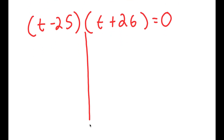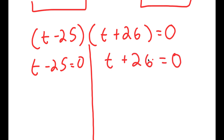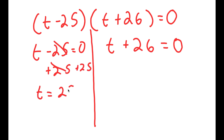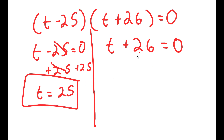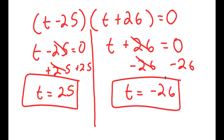This gives me two equations: t minus 25 equals 0, and t plus 26 equals 0. For t minus 25 equals 0, I add 25 to both sides and get t equals positive 25. For t plus 26 equals 0, I subtract 26 from both sides and get t equals negative 26. So I have two solutions for t.